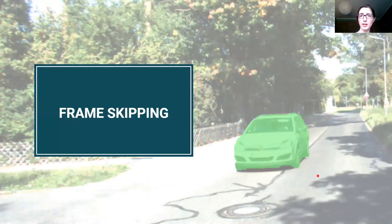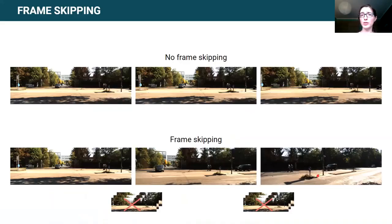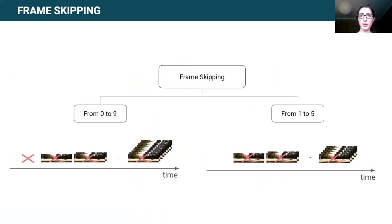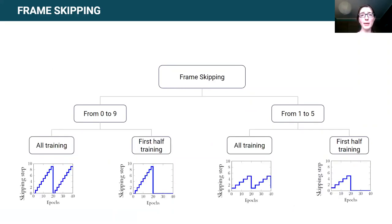The second curriculum is frame skipping, where we subsample the video sequence to expose the model to sequences with faster changes. Two curriculums have been explored, where we increase the number of skipped frames through time. Each of them with two implementations, applying the frame skipping during all training time or only during the first half, as they are implemented on the baseline model of forward step, which has two differentiated phases of training.